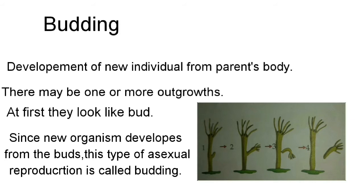The very first thing we need to keep in mind about budding is that it is an asexual mode of reproduction. Development of a new organism starts growing from the parent body. There may be one or more outgrowths — it may be one single growth or more than one. At first they look like a bud, and this bud later develops into a mature organism.